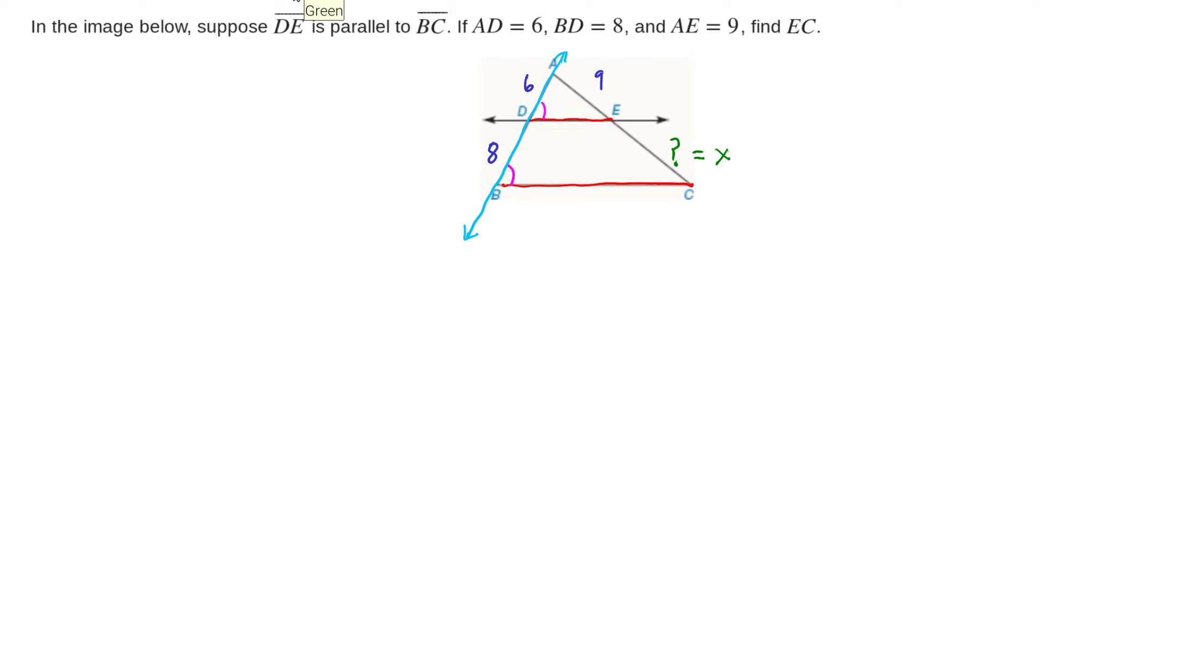By the same exact argument, but over here on this side, AC is also a transversal. And this time, we get that these two angles are congruent. And notice that if we look at these larger triangles, if we look at this triangle, ABC.